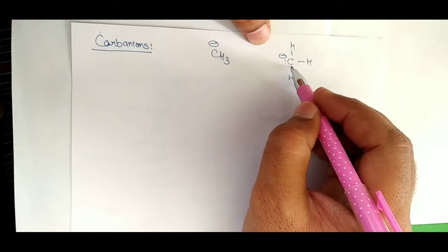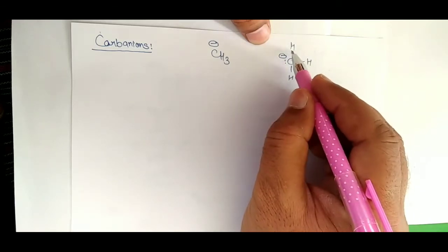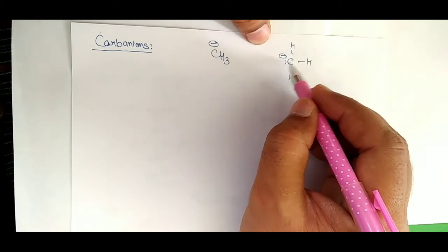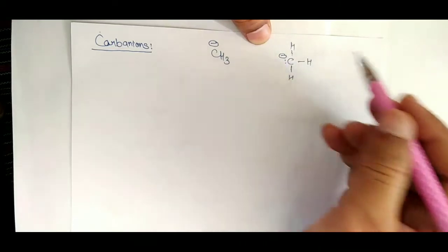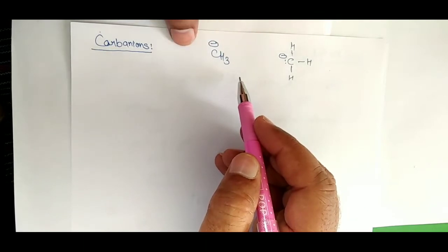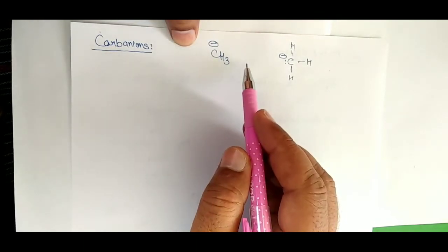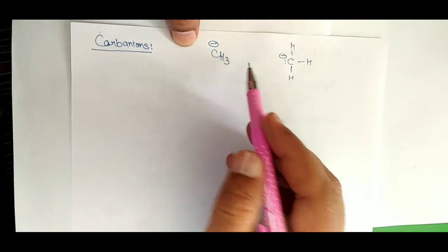This bond consists of 2 electrons, this from 2 electrons, this from 2 electrons, and these are 2 — therefore 8 electrons in the valence shell. So this is the definition: the carbon carries a negative charge and has 8 electrons in its valence shell. So this is called carbanion.